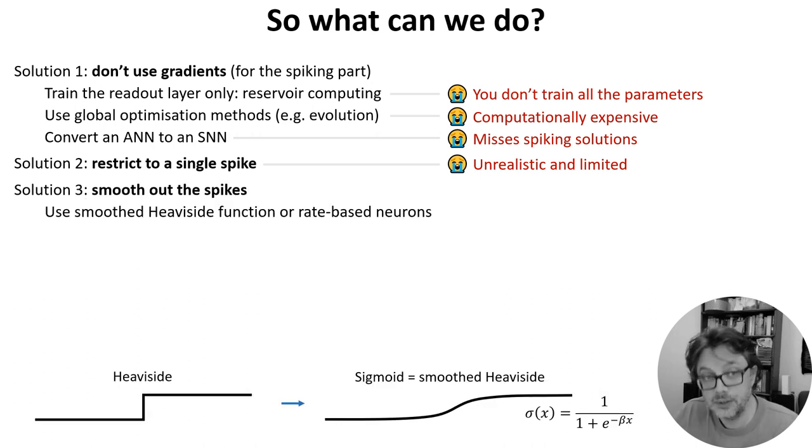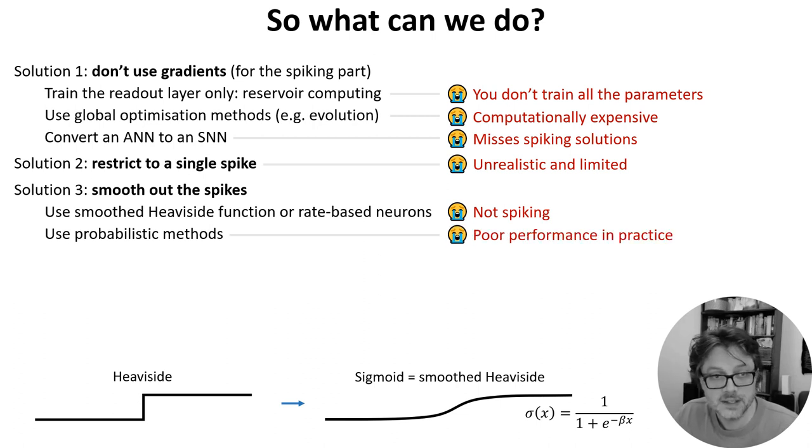A clever trick is to take the non-differentiable Heaviside function and smooth it out to a sigmoid that you can differentiate, and this has been shown to work in at least some cases, but it's not a spiking neural network if you do that. A related trick is to look at probabilistic neuron models, and then the parameters of their distributions are differentiable. This is theoretically nice but in practice it doesn't seem to scale very well.